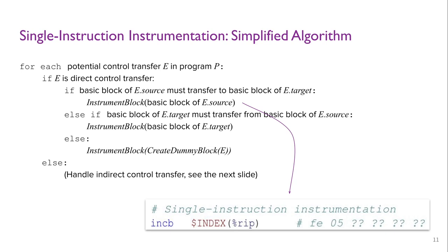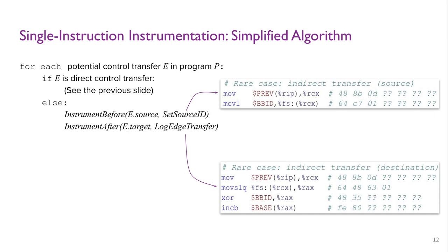There are also corner cases where the jump target is unknown at compile time. For completeness, RIF also handles such scenarios such as function pointers. Before the control transfer instruction, RIF inserts instructions to store the source block ID into a thread-local variable. Similarly, RIF identifies the control transfer targets. For example, functions have their addresses taken. RIF inserts instructions at the beginning to fetch the source block ID and increase the counter.